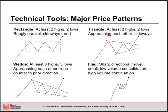A triangle — you're still looking at at least two highs and two lows, but now the highs and the lows are approaching each other. In this case, you're seeing slightly lower highs and slightly higher lows. There are different kinds of triangles, but in each case the highs and lows are approaching each other. In an uptrend, you'd see this consolidation with volume decreasing consistently throughout the pattern, and then a breakout and continuation of the preceding move.